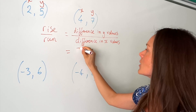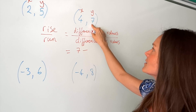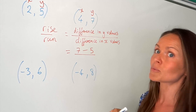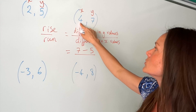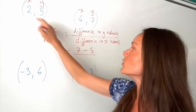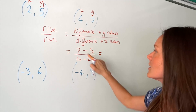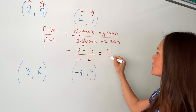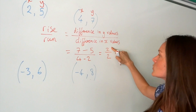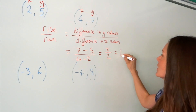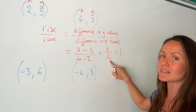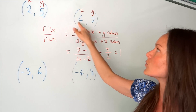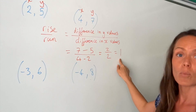Remember, difference means subtract. So I'm going to do seven minus the other y value, which is five. And underneath, I'm going to subtract the x values: four minus two. Seven take away five is two, four take away two is two, and two divided by two is just one. So the gradient of the straight line that passes through those two points is positive one.